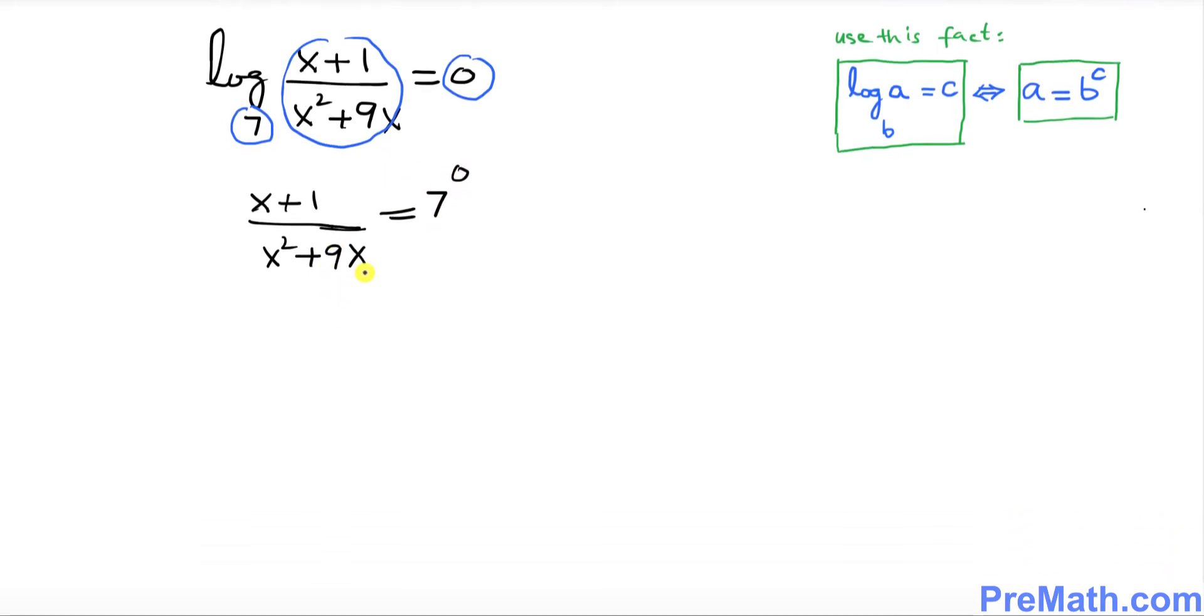As you recall, 7 to the power zero is one. I can write (x+1) over (x² + 9x) equal to 7 to the power zero, which is one. Does it make any difference if I put one divided by one?